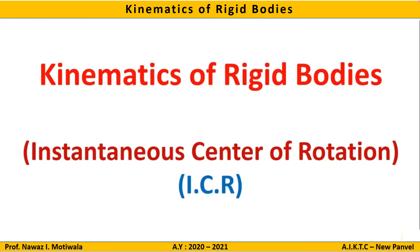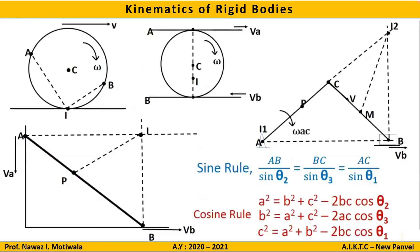Welcome students. In the previous class we studied how to locate ICR for various configurations such as one link mechanism, two link mechanism, three link mechanism, and cylinder between two parallel plates moving in the same and opposite directions. We also saw how to find distances from ICR to a particular point using the sine rule and cosine rule. Now let us apply all these concepts to the given problems.